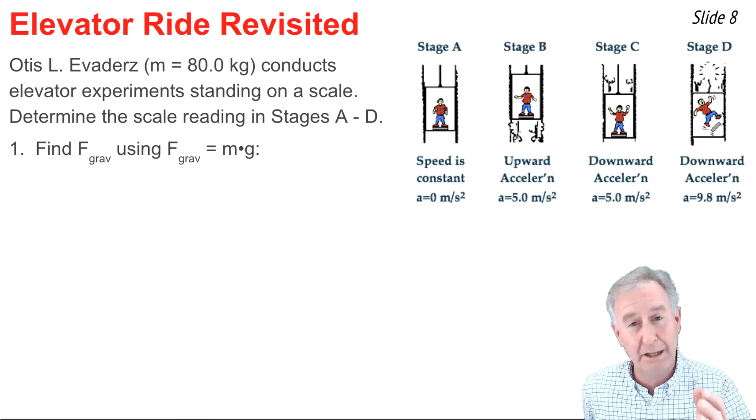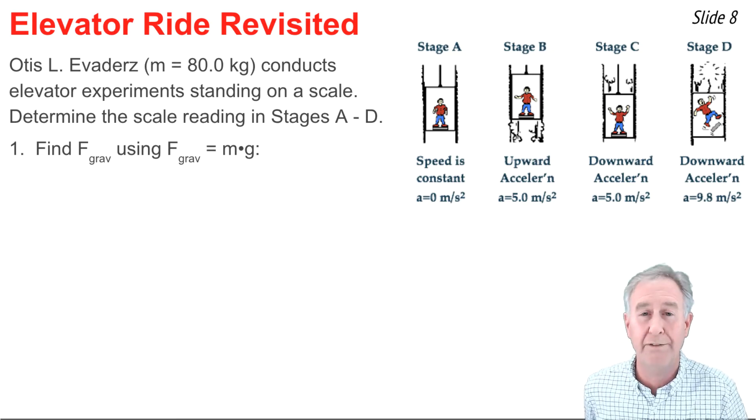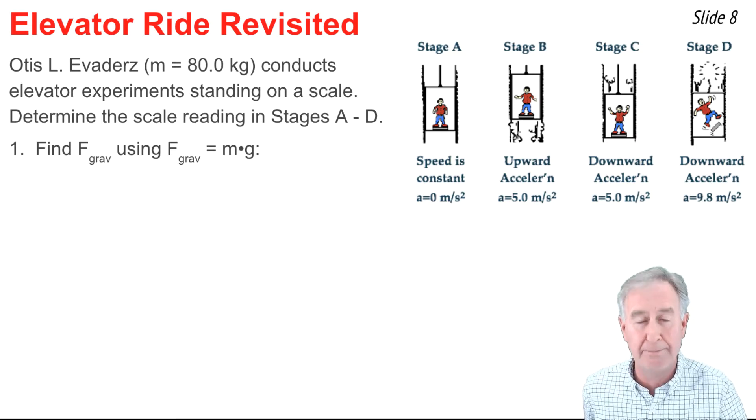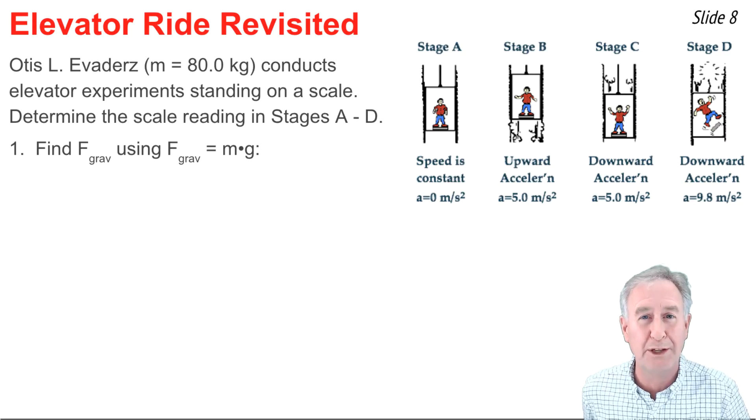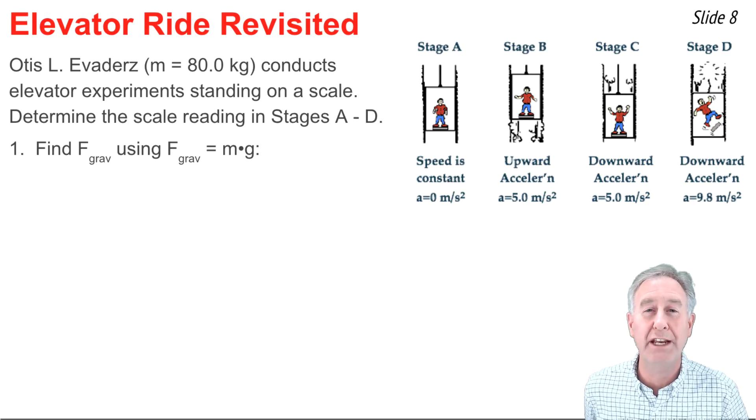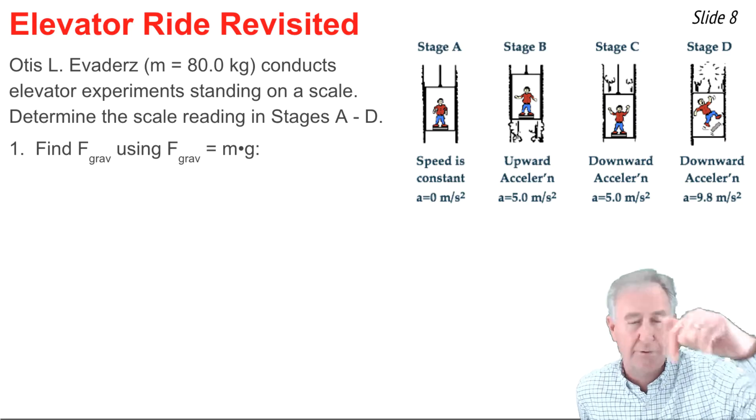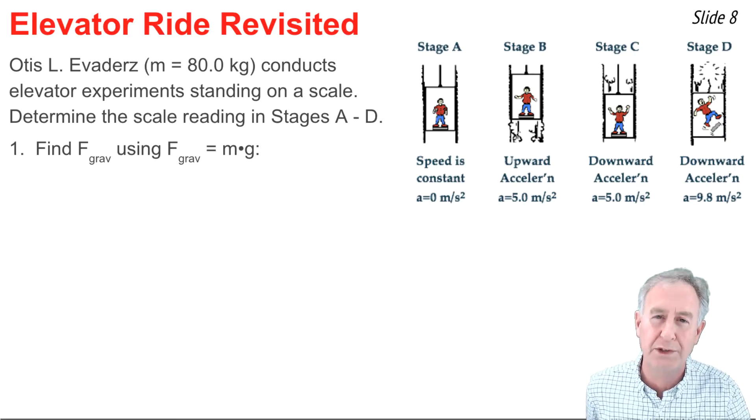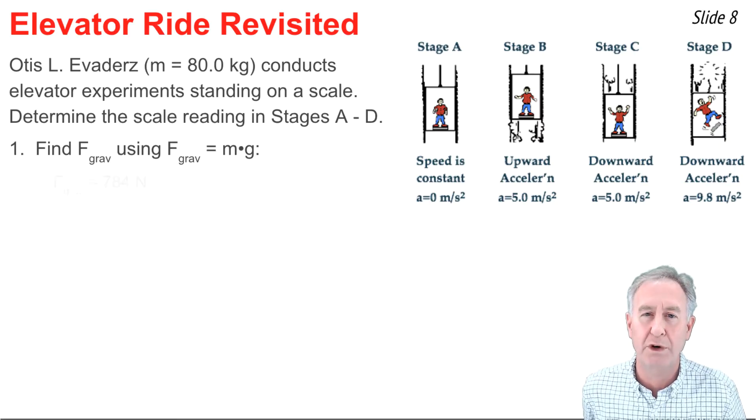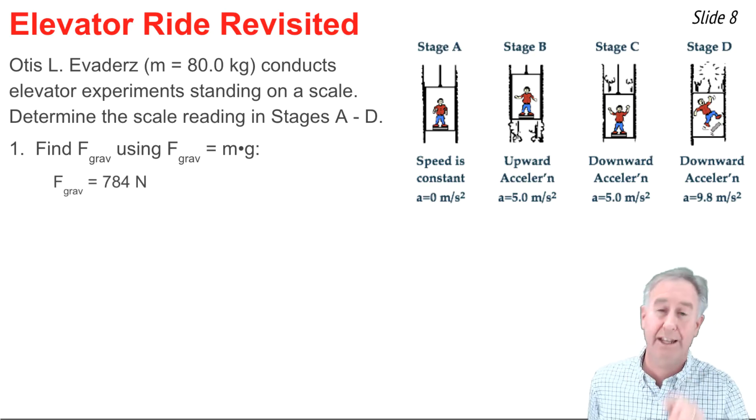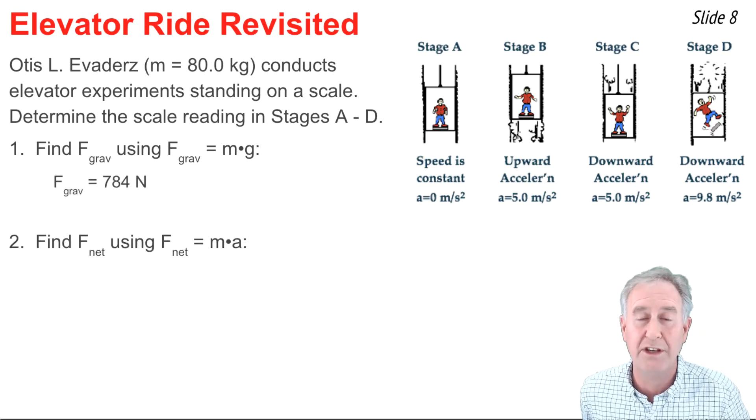I'm going to begin by calculating the gravity force or weight of Otis by going m times 9.8 newtons per kilogram. That's 784 newtons and that's the down force on Otis, Otis's weight. Now I'm going to calculate the net force on Otis using F net equals ma with the a's given.